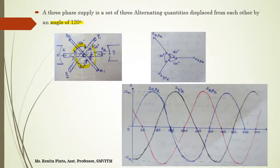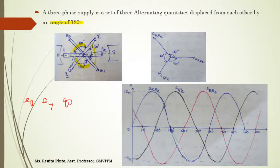These coils named as R1-R2, B1-B2, Y1-Y2 are mounted on the shaft. The ends of each coil are brought out through the slip rings and brush arrangement to collect the induced EMF. Let ER, EY, and EB be the three independent voltages.